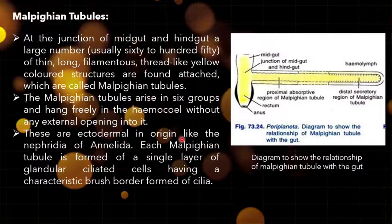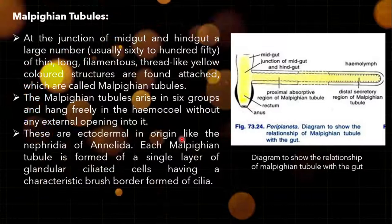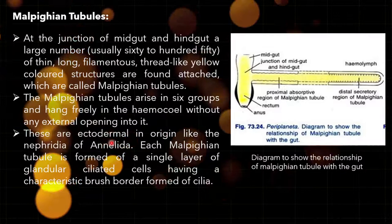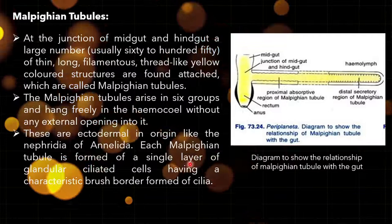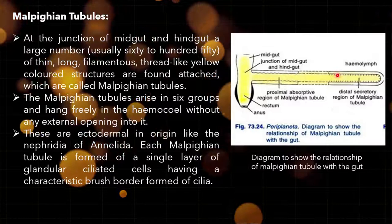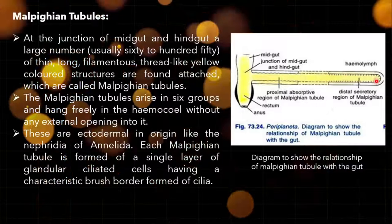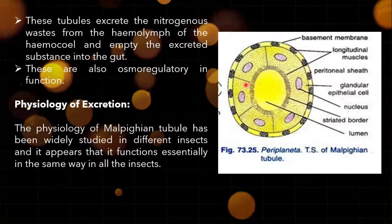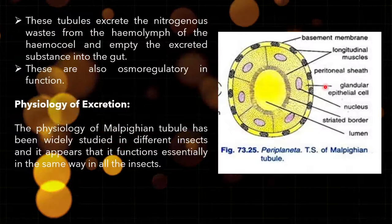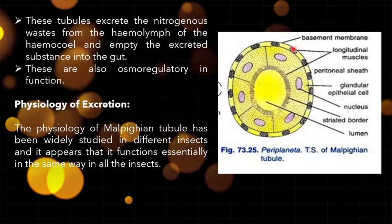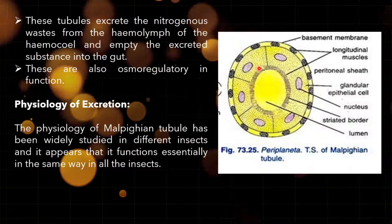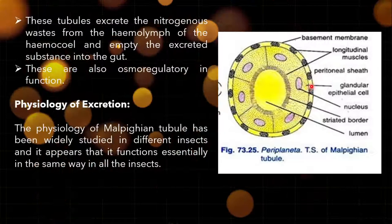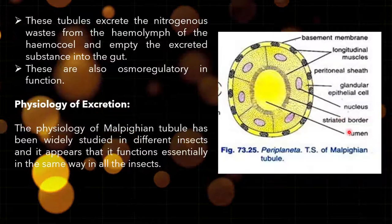Malpighian tubules are ectodermal in origin, like the nephridia of Annelida. Each Malpighian tubule is formed of a single layer of glandular striated cells having a characteristic brush border formed of cilia, which helps in absorption. In the histological TS of Malpighian tubule: the outermost layer is the basement membrane with longitudinal muscles, and in the middle are glandular epithelial cells with a nucleus, striated border, and a central lumen.